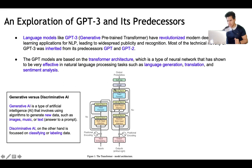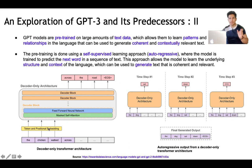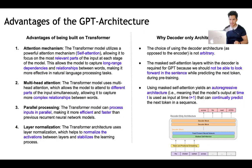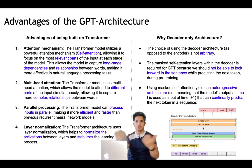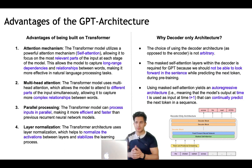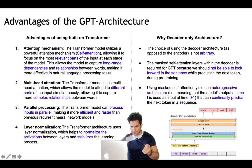One more thing to note: GPT uses a decoder-only transformer. While the transformer has two parts — encoder and decoder — the GPT model only uses the decoder part of the transformer architecture. The reason for this is masked self-attention. Now let's look at the advantages of the GPT architecture. The transformer is very powerful because it's based on the decoder part and is pre-trained on a huge amount of internet data in a self-supervised and autoregressive way by predicting the next word.